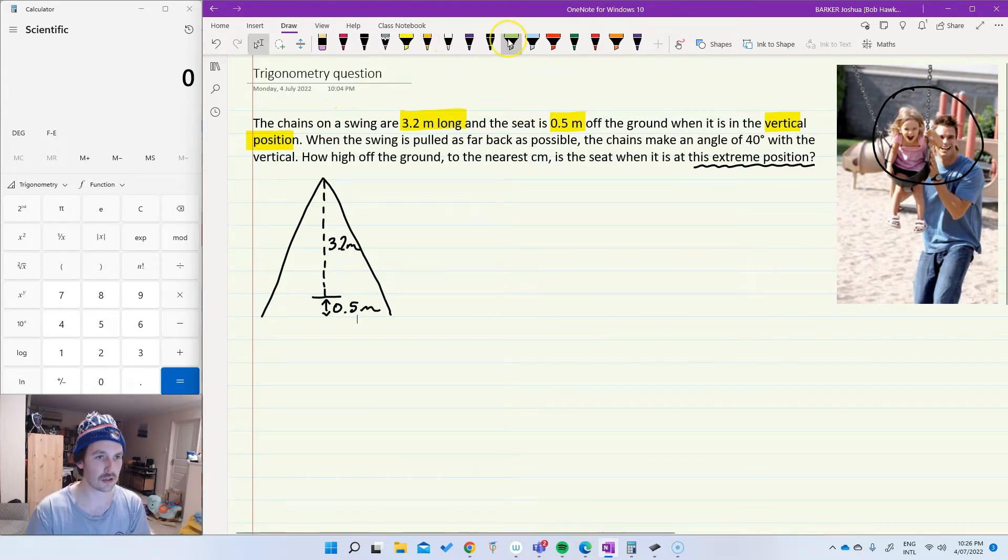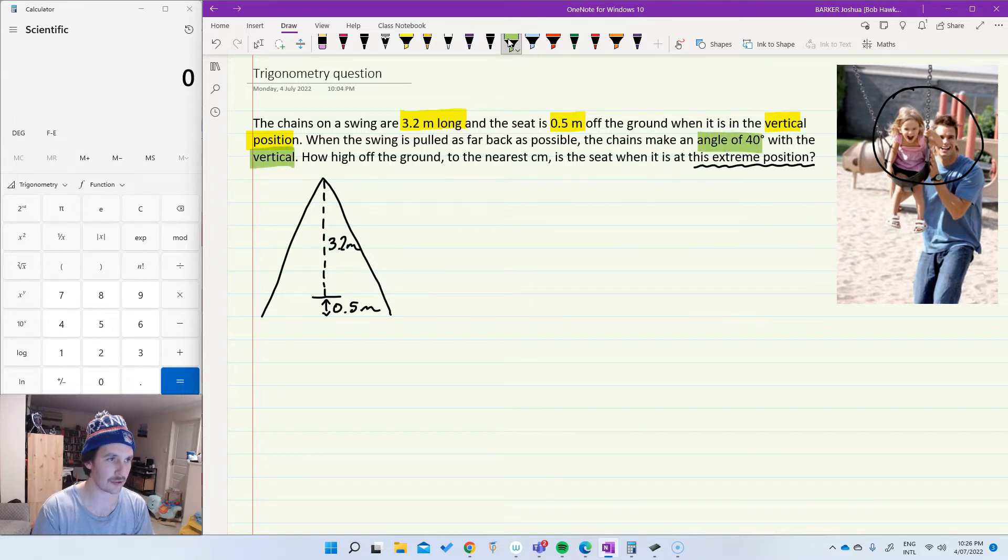Piece of information number two is that when the swing is pulled as far back as possible, the chain is going to make an angle of 40 degrees with the vertical. Okay, this is why this might get a little bit messy, but I'll do my best. So that swing is going to be pulled up, let's say to here. So now I've got the swing at this sort of height. My chains are going to be the same length, they're still 3.2 meters, but I'm going to be making an angle of 40 degrees with the vertical just there.